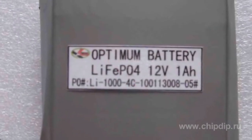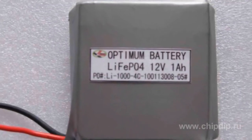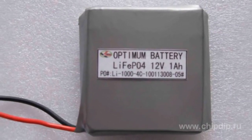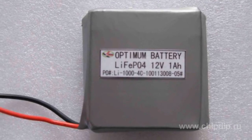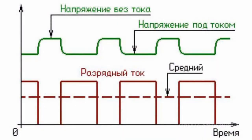A charged one ampere hour battery may theoretically provide one ampere current per one hour. Practically, too high a battery discharge current may decrease energy output. It decreases operating time and may result in overheating.